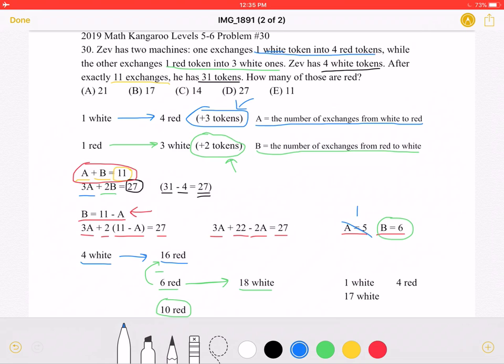However, we need to remember that he still has 1 exchange from white to red left over. So he will take 1 out of the 18 white and exchange it for 4 red. So 18 minus 1 will leave him with 17 white tokens and 4 plus the 10 red would leave him with 14 red.